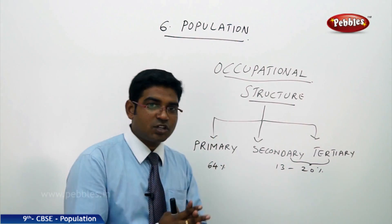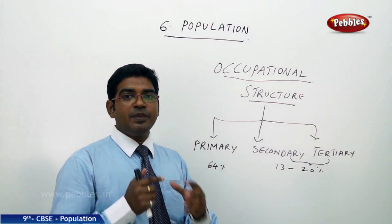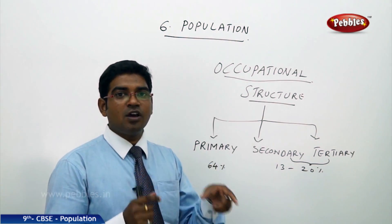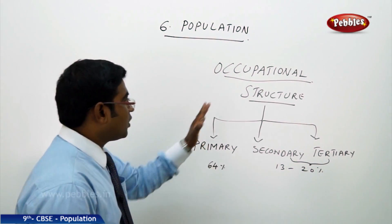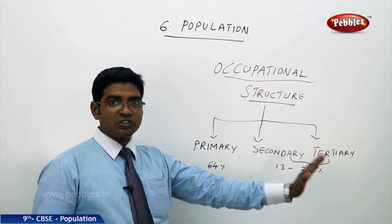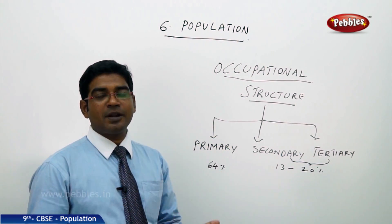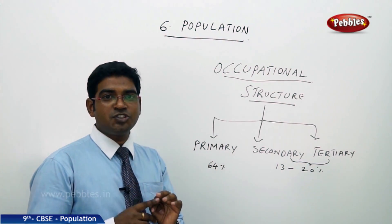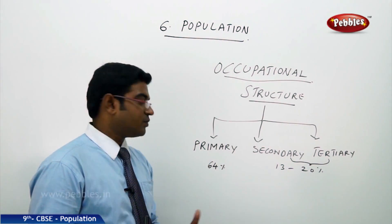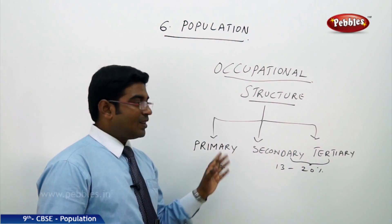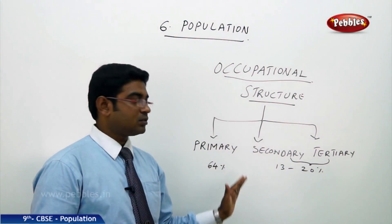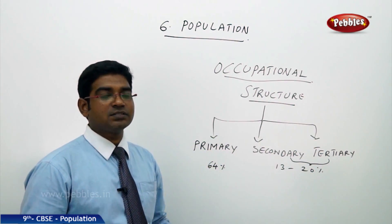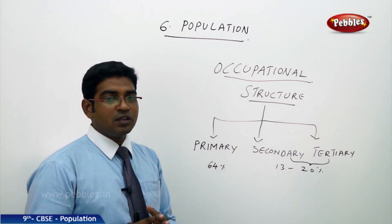Occupational structure is the division of people into different categories based on their occupations. It has three bifurcations based on the sectors where people work. If they work in agriculture, fishing, or mining, these come under the primary sector. If they work in industrial and manufacturing sectors, they come under secondary. When working in service-oriented sectors, they come under the tertiary sector.